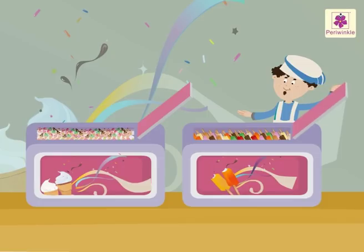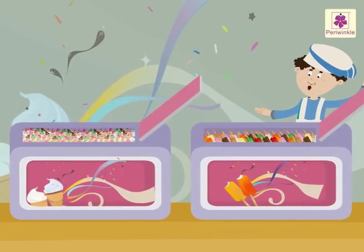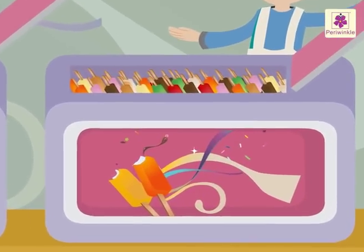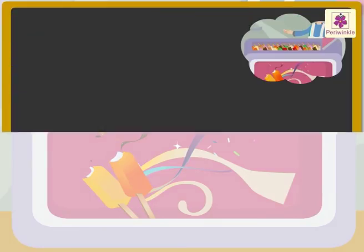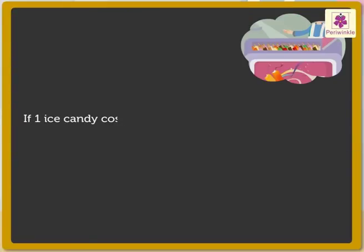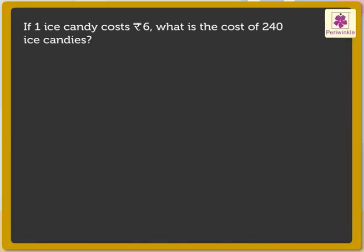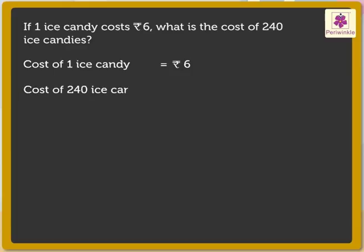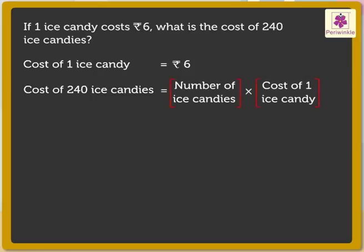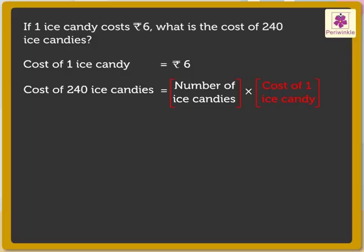Look, there are different types of ice creams at this shop. Look at these colourful ice candies. If one ice candy costs 6 rupees, what is the cost of 240 ice candies? The cost of one ice candy is 6 rupees. So, to find the cost of 240 ice candies, we multiply the number of candies with the cost of one ice candy.